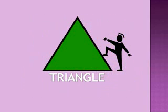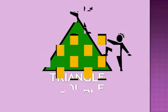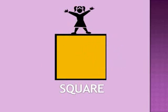This is a triangle. It has three straight sides. This is a square. It has four equal sides. That means each side is the same length.